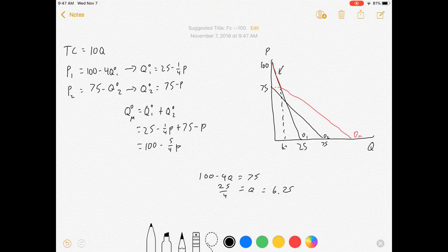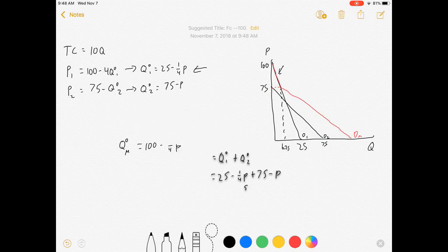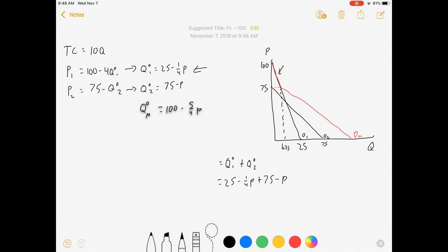So up until 6.25, we can just use our first demand equation. After 6.25, we now want to use this bigger one. We're going to assume that our monopolist wants to make more than six units of the good, in which case we're just going to use our market demand curve.